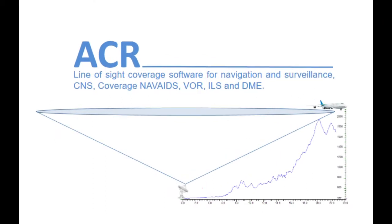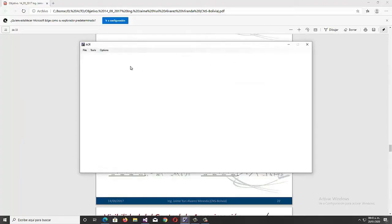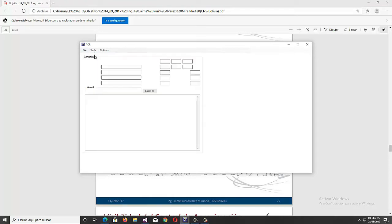ACR is a powerful software that allows us to calculate line-of-sight coverage easily and simply. For this, the SRTM-1 topographic database is used. Then we execute the ACR program and add the data that is needed.